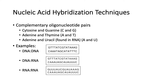In DNA, there are two such pairs: cytosine and guanine, abbreviated C and G, and adenine and thymine, abbreviated A and T. In RNA, thymine is replaced by uracil, so we have adenine and uracil, abbreviated A and U. DNA can pair with another DNA strand, DNA can also pair with RNA, and RNA can also pair with another RNA strand.